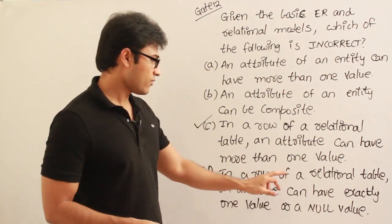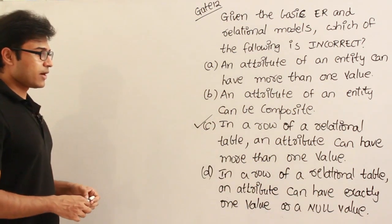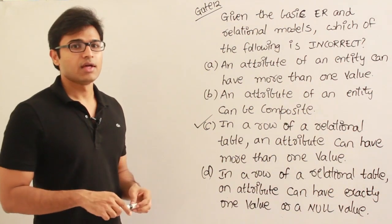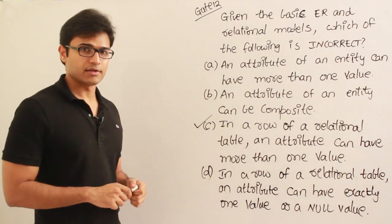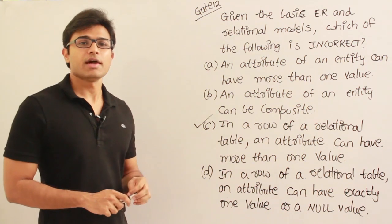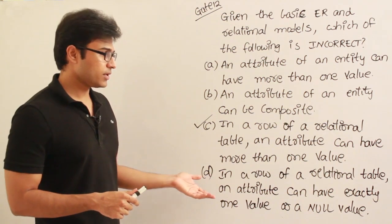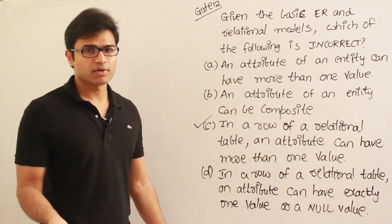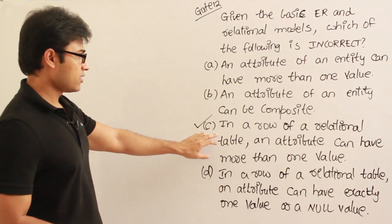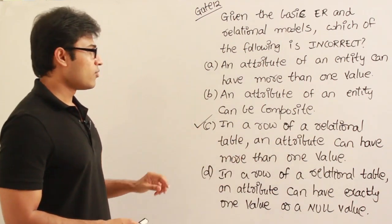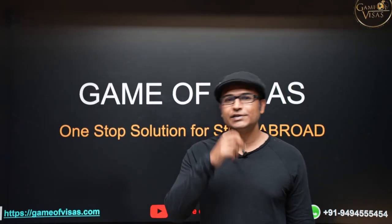So option C is incorrect. Option D says in a row of a relational table, an attribute can have exactly one value or a null value — and that is allowed. The only exception is a primary key attribute, which cannot have a null value, but since we are not specifically talking about a primary key attribute, this is acceptable. Therefore, the only incorrect statement is option C.